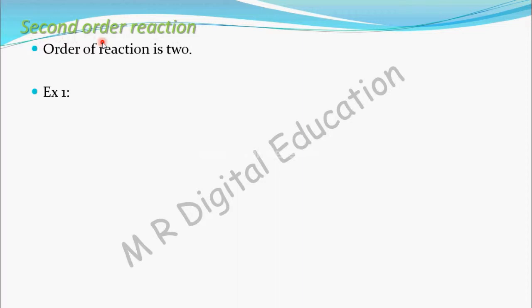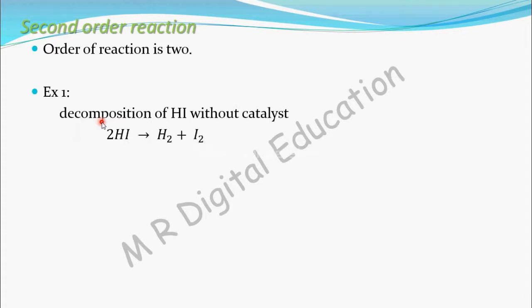Examples for second order reactions: decomposition of HI — that is hydrogen iodide — without a catalyst acts as a second order reaction. But decomposition of HI with a catalyst, that is on the surface of gold, acts as a zero order reaction. So remember: decomposition of HI without catalyst is second order — that is, 2HI → H₂ + I₂.